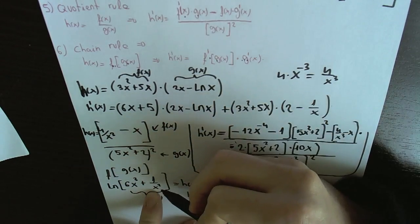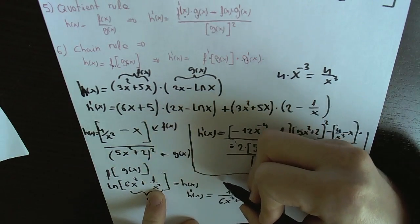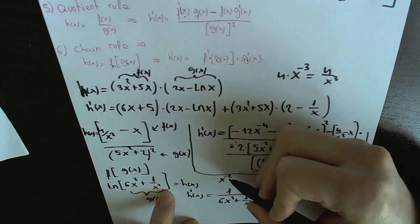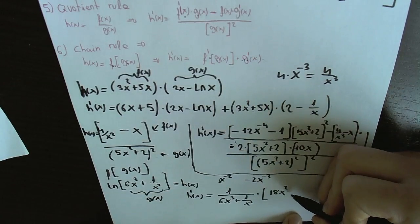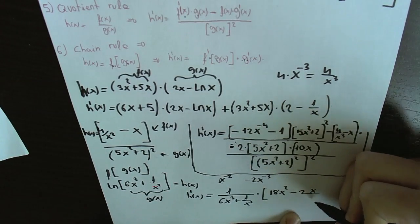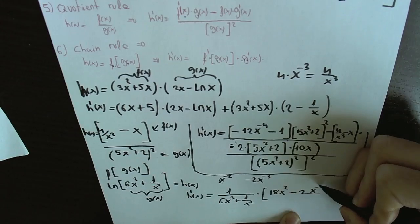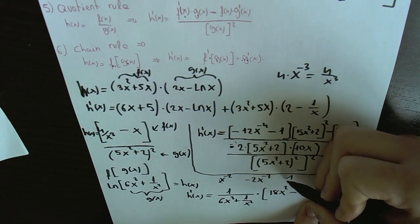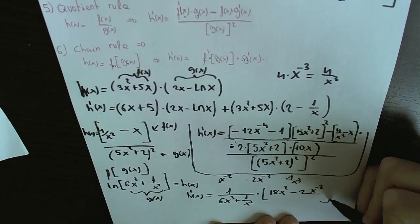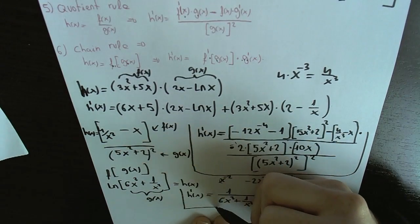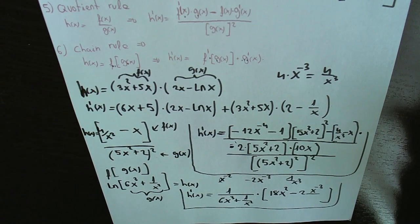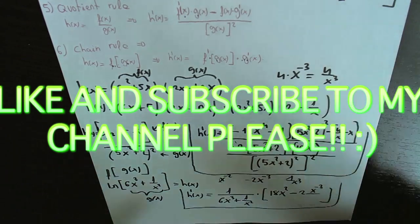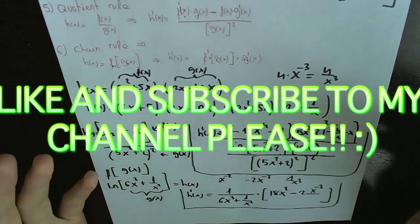The derivative of 1 divided by x squared — written as x to the power minus 2 — is minus 2x to the power minus 3, which can also be written as minus 2 divided by x cubed. So the full derivative is 1 divided by the inner function, multiplied by 18x squared minus 2 over x cubed. It only takes about 30 seconds to calculate — no real effort at all.